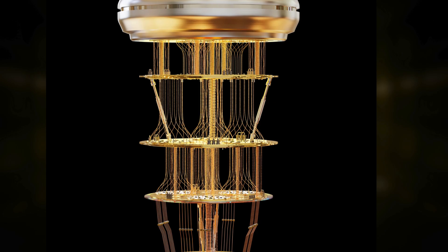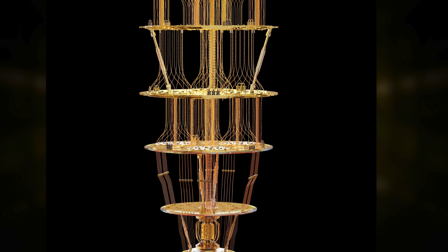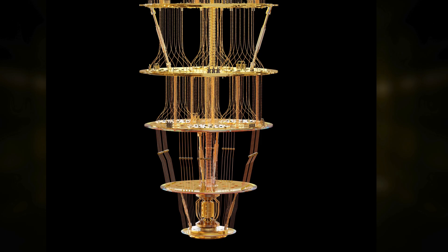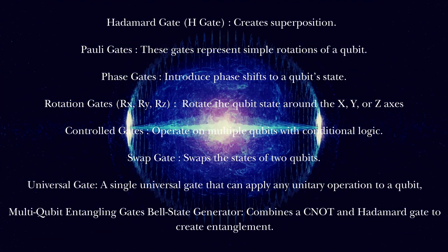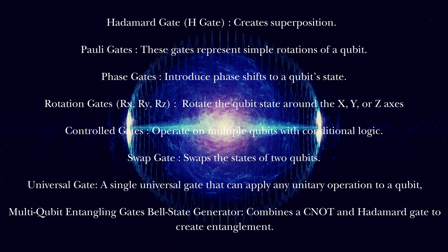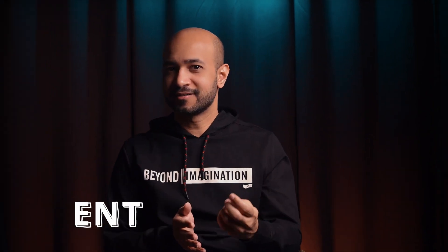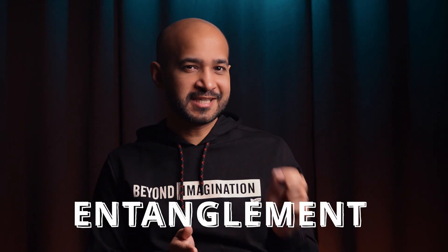Superposition is achieved through precision control of these particles. Scientists use lasers, magnetic fields, or microwave pulses to manipulate qubits — basically photons or electrons — into a state where they simultaneously represent multiple possibilities. Just as classical computers use gates like AND and OR to process binary bits, quantum gates operate on qubits. There are several quantum gates used to manipulate qubits for specific functions. Two of the most fascinating use cases of these gates are to achieve superposition and entanglement.